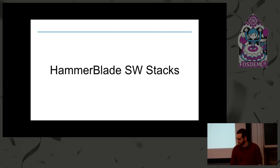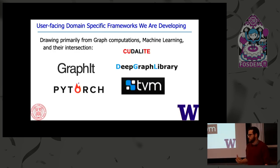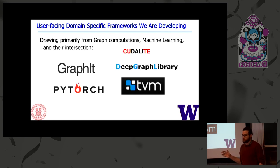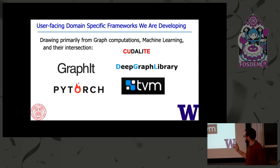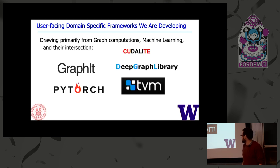I'm going to give an overview of our software stack. One of the primary goals of HammerBlade is programmability and portability of code written in higher-level frameworks. CUDA Lite, our low-level programming API, is the building block for these higher-level frameworks. Our collaborators at Cornell are working on a PyTorch backend for HammerBlade. We at UW are also working on DGL — a Python library for graph-structured data using machine learning — TVM, a machine learning IR, and Graphit, a DSL for high-performance graph analytics.